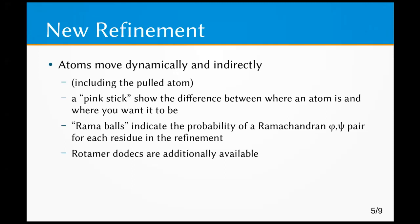A pink stick shows you the difference between where an atom is and where you want it to be. Generally speaking, you want to keep the pink sticks short or hardly visible at all. If you see long sticks, that's an indication that there's something problematic — Coot won't move the atom to where you want it because there would be a clash, for example. That is represented by the atom overlap visualization.